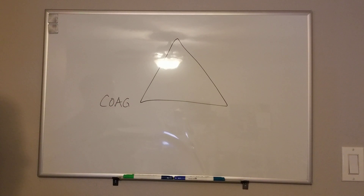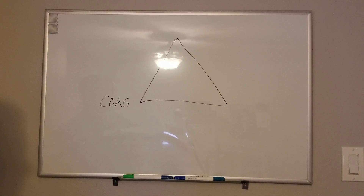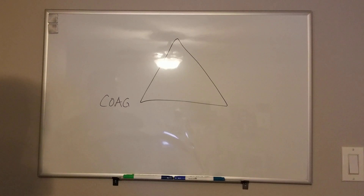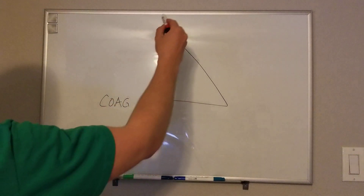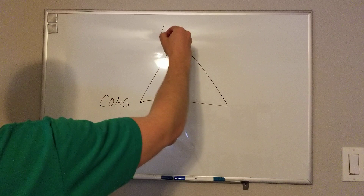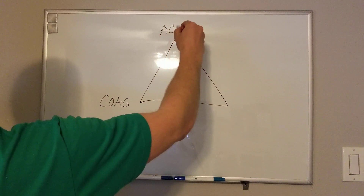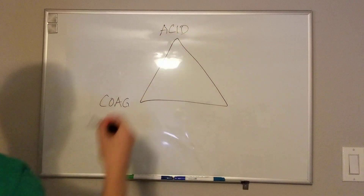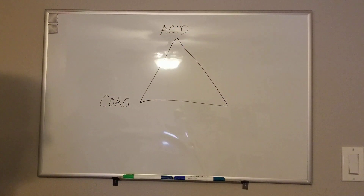Coagulopathy can occur because of dilution, consumption, low temperature, acidosis, or for a lot of different reasons. The second part of the triad is acidosis — specifically metabolic acidosis, like an increase in lactic acid and an inability to clear it.